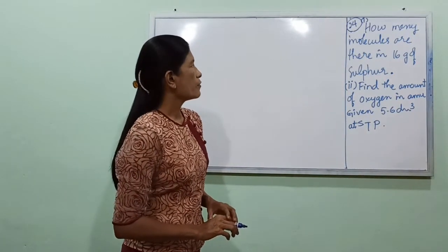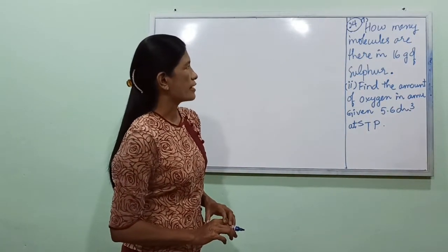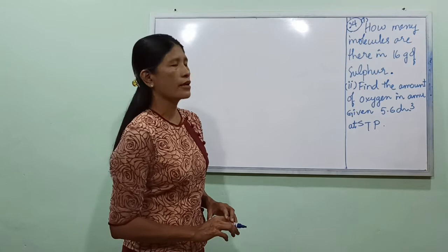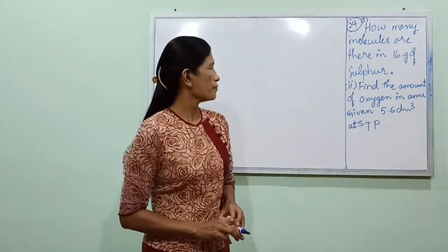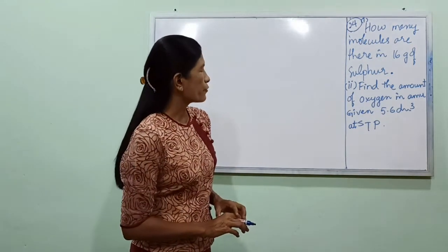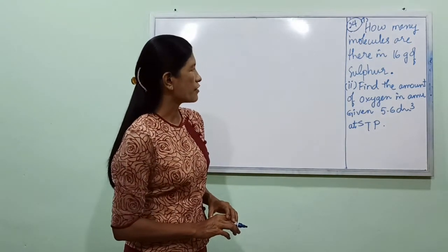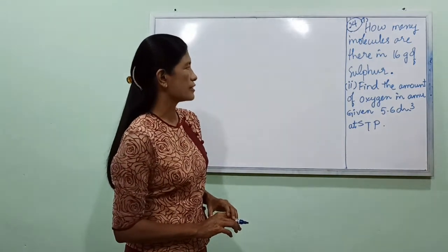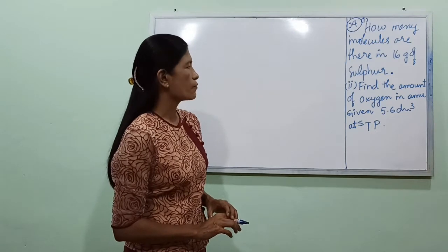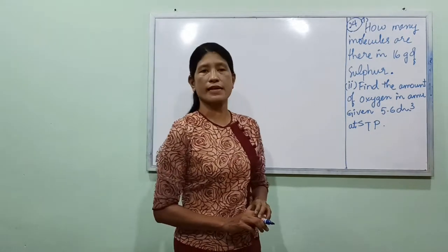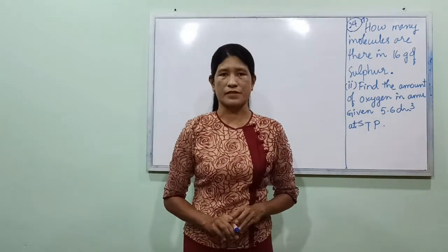How many molecules are there in 16 grams of sulfur? Find the amount of oxygen in AMU given 5.6 dm³ at STP.